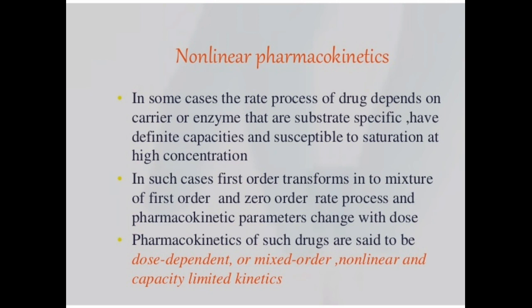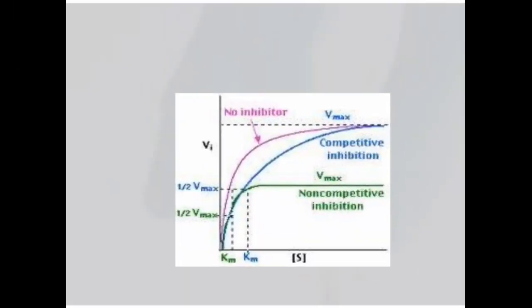Pharmacokinetics of such drugs are said to be dose dependent or mixed order or nonlinear capacity limited. In this case, the rate process doesn't depend on dose. Initially in first order kinetics, the rate process is depending on the dose and you can see the linearity in the curve. And in other way, if it's following zero order kinetics then rate process doesn't depend on dose.